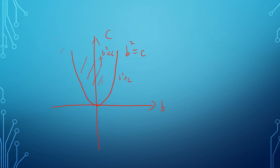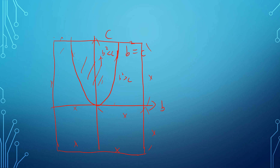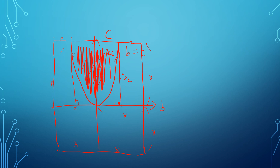To do this calculation, I define the side length as x, so the square region on the bc-plane runs from −x to x in both directions. I need to find the area of the red region — the part inside the parabola where b² < c — and that is our goal.